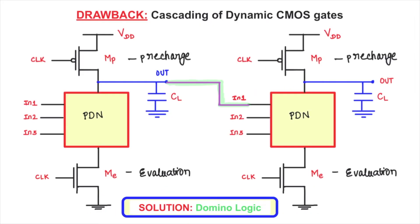The performance of a dynamic logic circuit is higher when compared to other static CMOS circuit designs. But one major problem in the design of dynamic circuits is in the direct cascading of dynamic gates. Direct cascading of dynamic gates fails and the cascaded circuit does not work. There is a possibility of a logical glitch also.